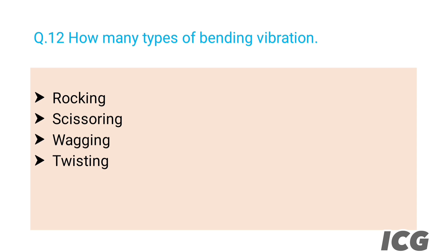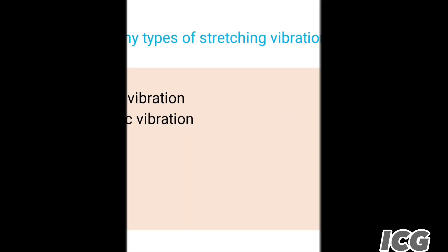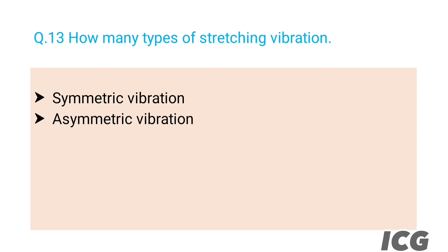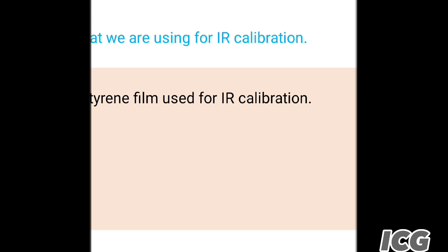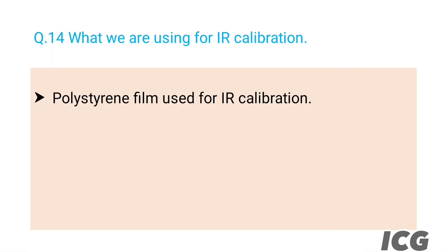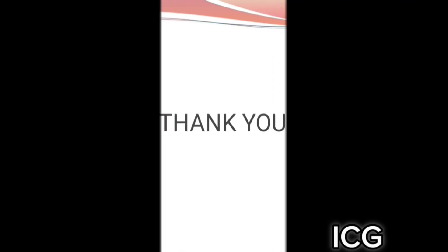The next question is: how many types of stretching vibration are in IR spectroscopy? The answer is there are two types: the first one is symmetric vibration and the second one is asymmetric vibration. The next question is: what do we use for IR calibration? The answer is polystyrene film is used for IR calibration.